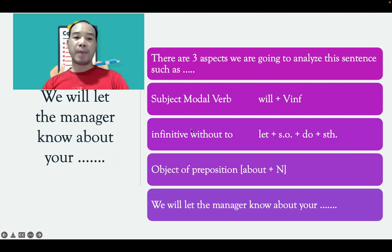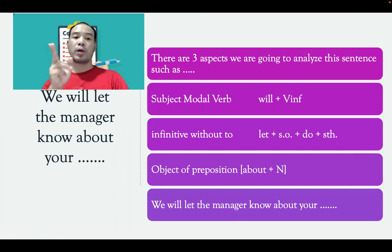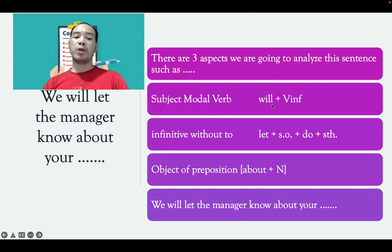There are two groups. There are two groups: one uses 'to' and one does not use 'to'. This group is called 'will' and 'let'. It is infinitive without 'to'.